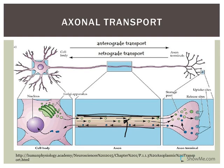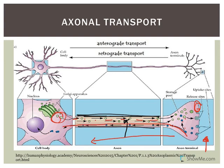An example of anterograde transport: neurotransmitters produced in the soma need to travel down and be stored in synaptic vesicles, then be released under the right conditions. Anterograde transport means the substance is moving away from the cell body. Retrograde transport involves substances traveling towards the cell body. An example of retrograde transport: after releasing neurotransmitters into the synaptic cleft, enzymes break them down, the breakdown products are taken back up, transported back towards the cell body, and then resynthesized.